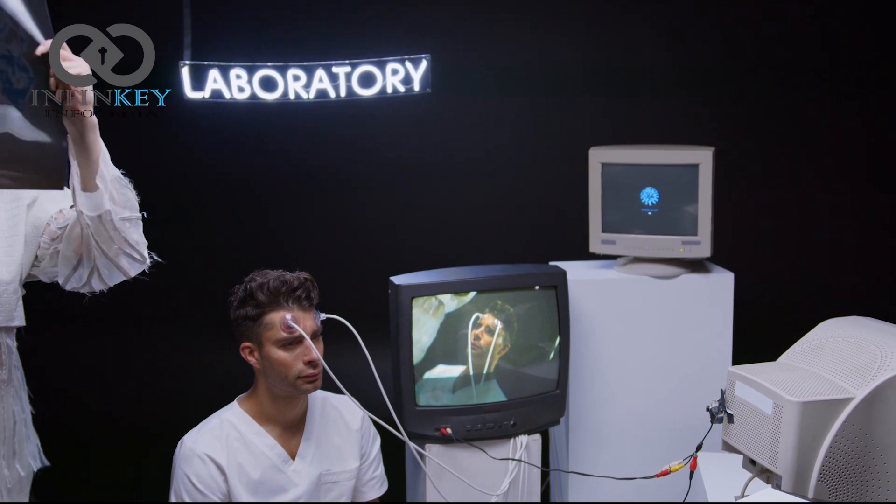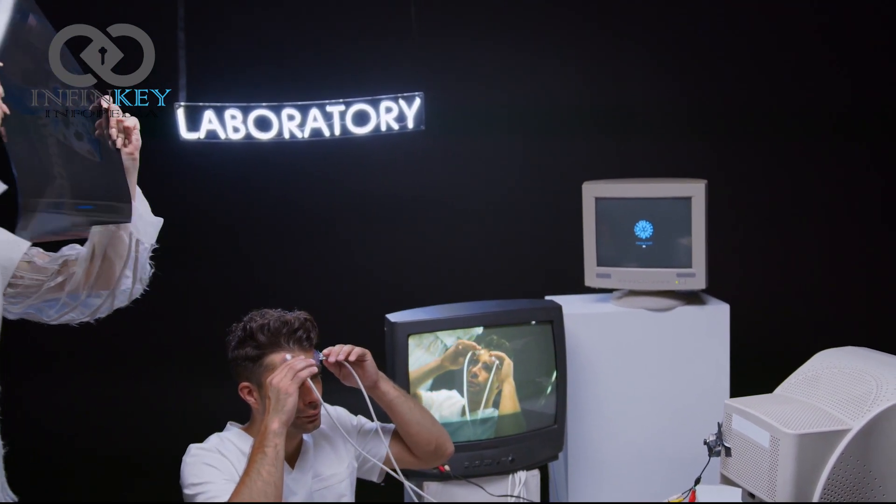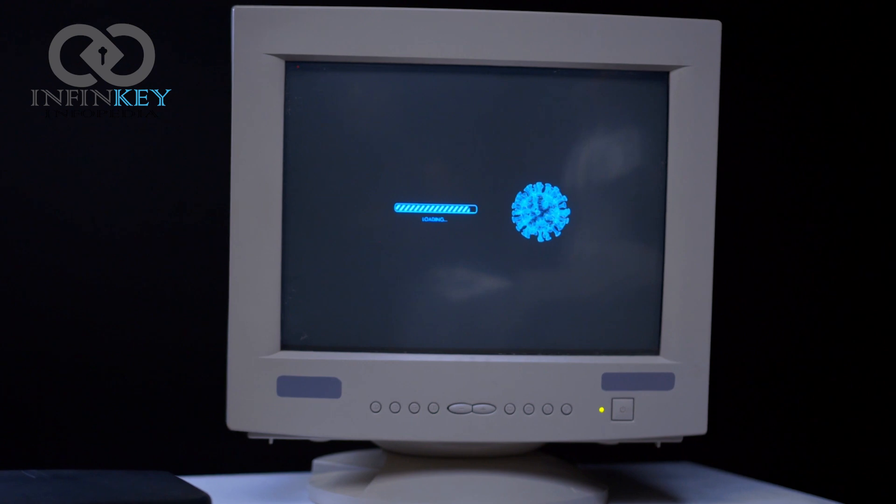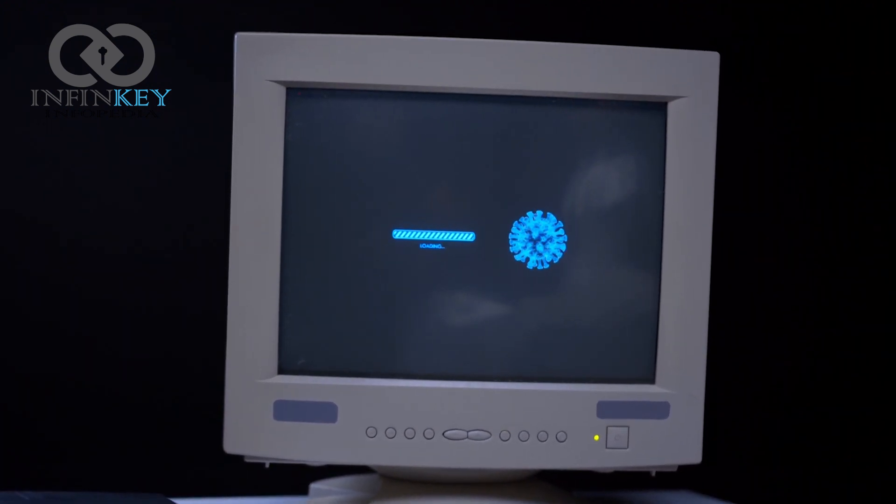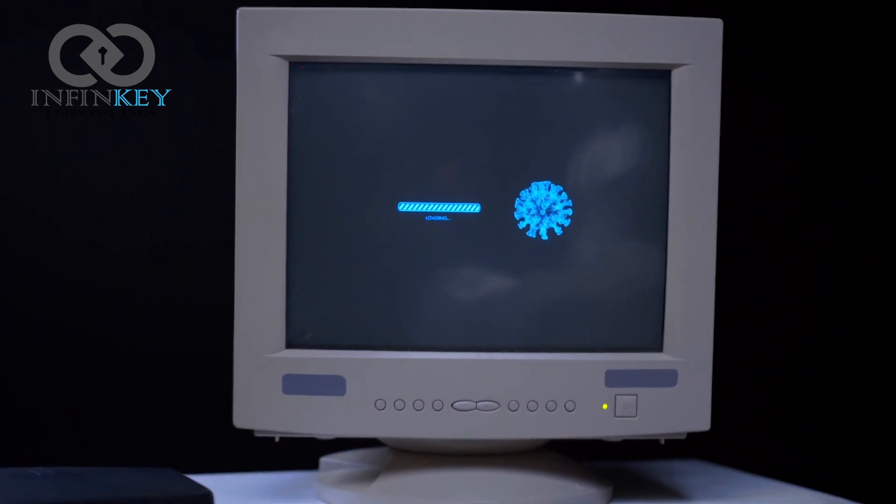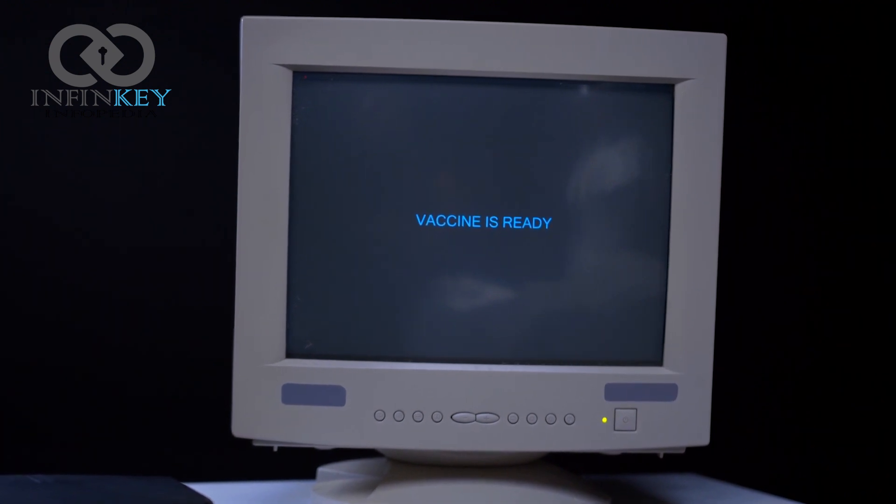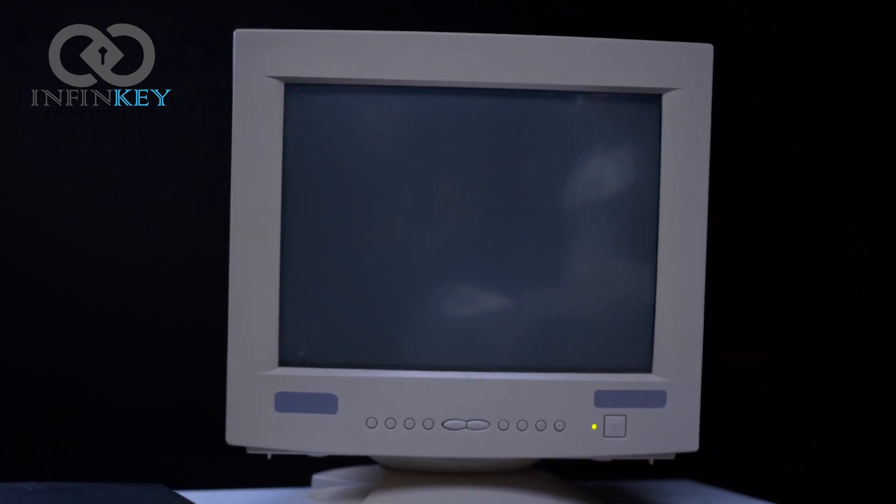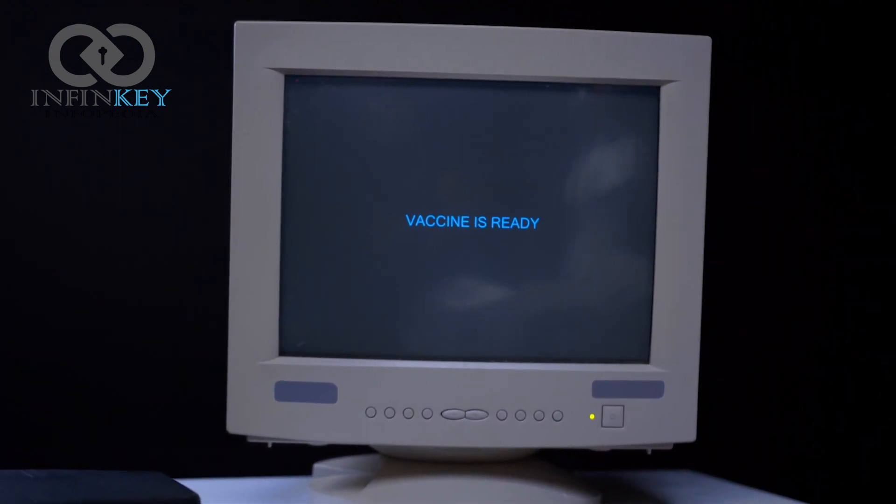Neuralink's chip processes and transmits neural signals that could be transmitted to devices like a computer or a phone. The company hopes that a person would potentially be able to control a mouse, keyboard or other computer functions like text messaging with their thoughts.